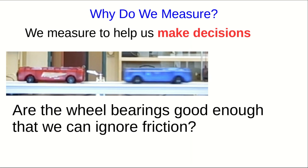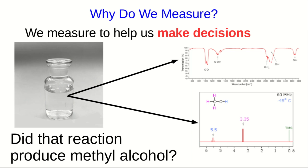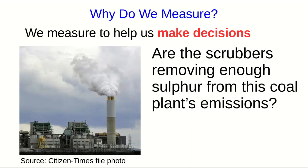During labs in this course, you might make measurements to determine whether you can ignore friction acting on carts as they collide. A chemist might make measurements to determine whether the chemical reaction they just carried out has produced the chemical they think it has. They might get spectra, which is just a lot of measurements. And an engineer might make very similar measurements to determine whether the scrubbers are working for a coal plant.